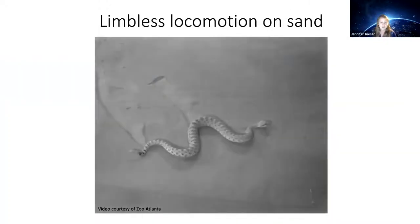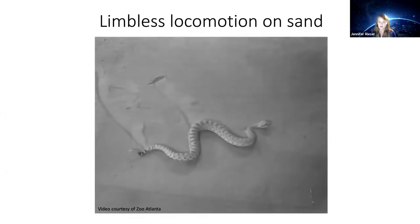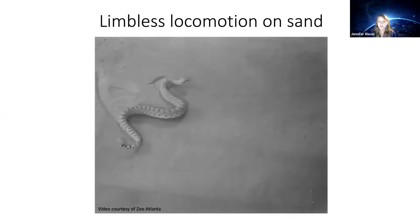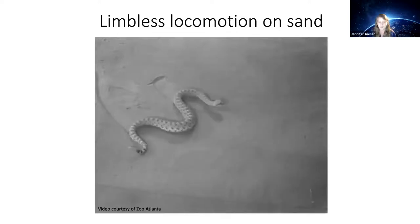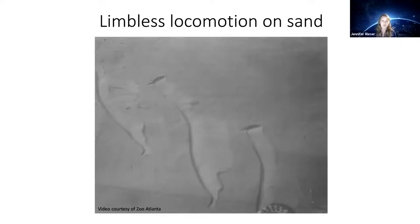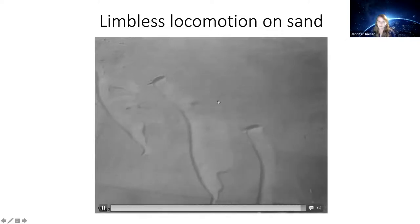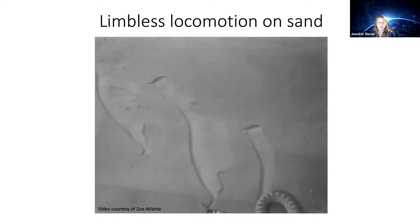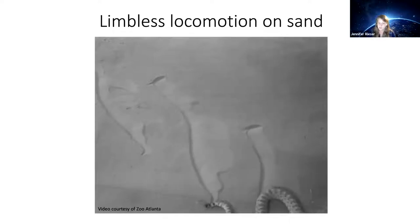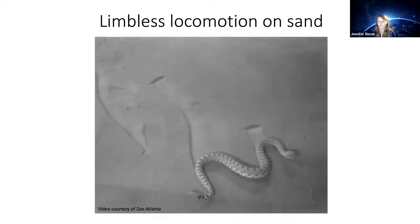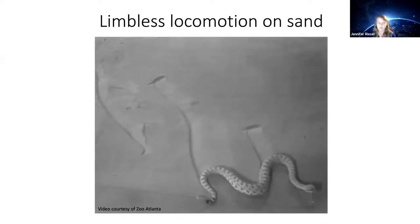In particular, I'm interested in locomotion, and as a soft matter physicist, I'm interested in movement in soft, flowable environments present in natural animal habitats. I'm going to focus on locomotion because it's an essential behavior for survival, and on limbless animals because their body is the only interface with the substrates they're moving on.